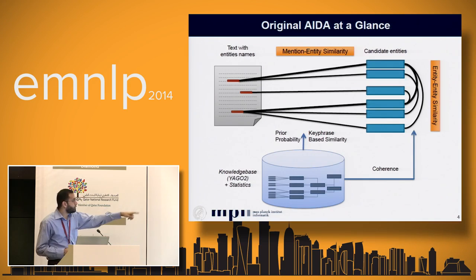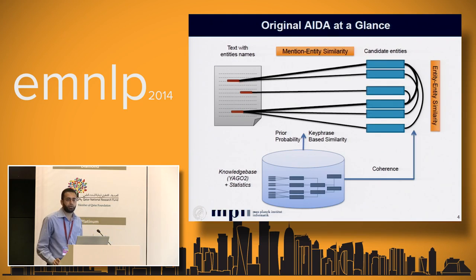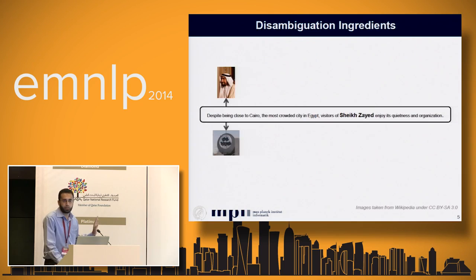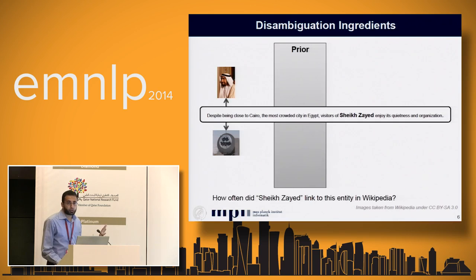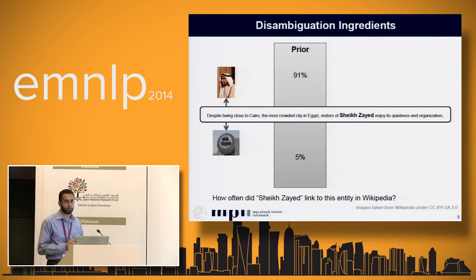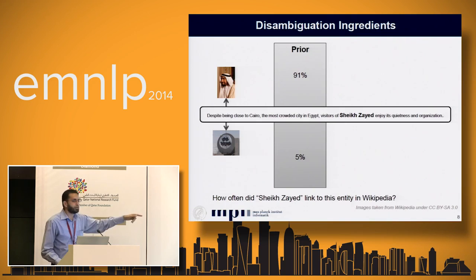To compute mention-entity similarity and coherence, we use a knowledge base. In the original AIDA we use YAGO 2, developed in-house at Max Planck Institute. For example, considering only two candidates for simplicity: the first component is 'prior' — how frequently a mention string is used to refer to an entity in Wikipedia, i.e., given only the name, what is the most natural meaning. Over Wikipedia, 'Sheikh Zayed' is used to refer to the former president more often than the city in Egypt.